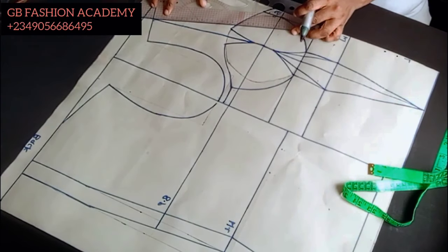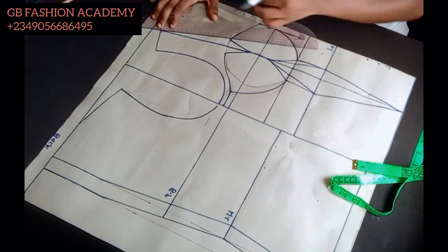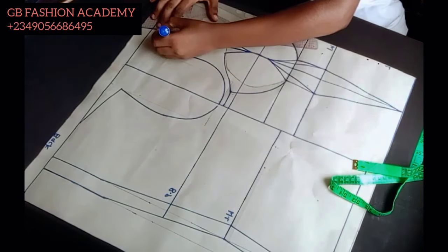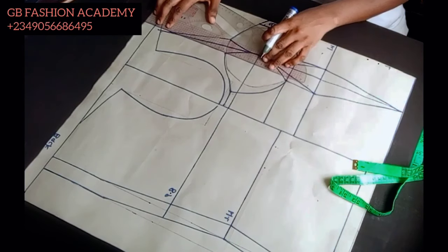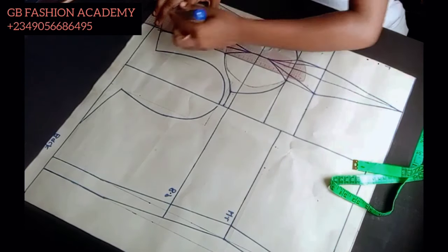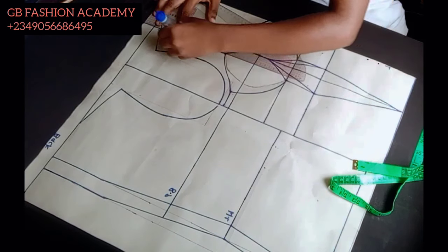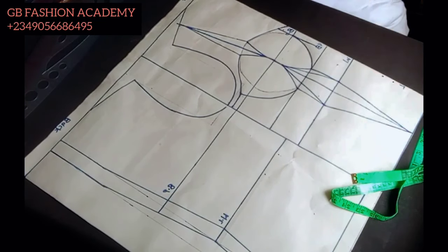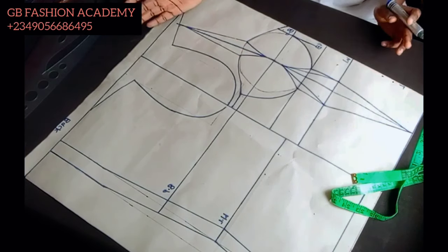Connect the dots like this and link it to the shoulder line. This is what we have for the front, using 0.75 on both sides for the overbust contouring.